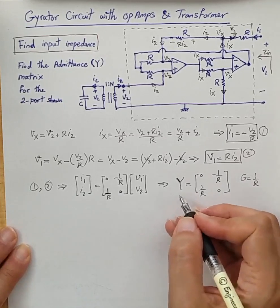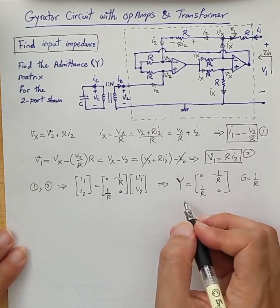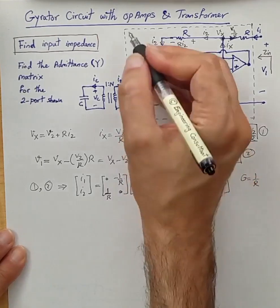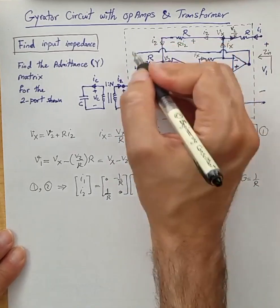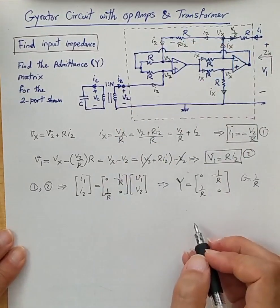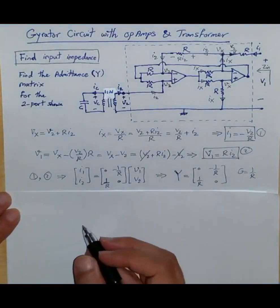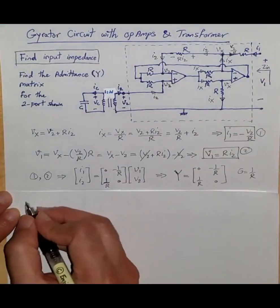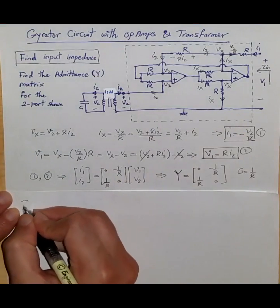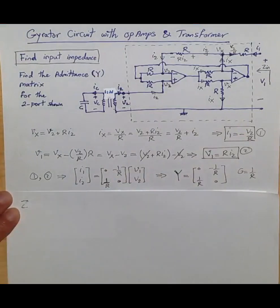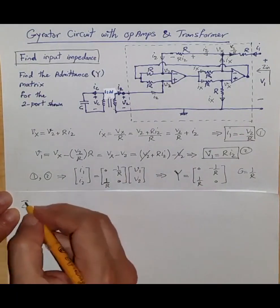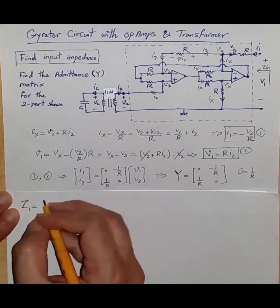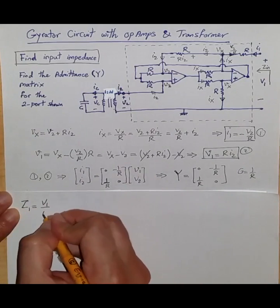We have confirmed that the admittance matrix corresponds to a gyrator, meaning the two-port enclosed in the box is a gyrator. To find the input impedance as seen from port 1, we start with the definition: Z_in is V1 over I1.